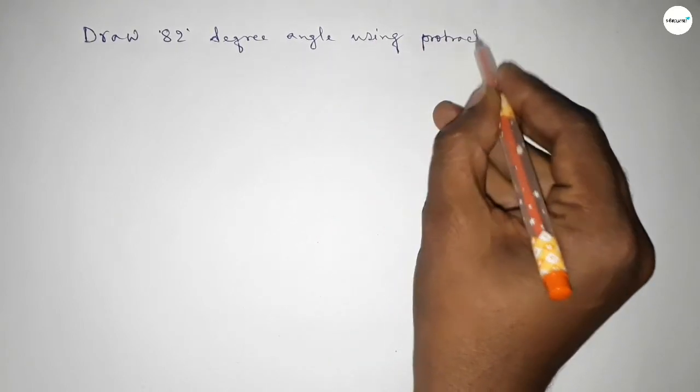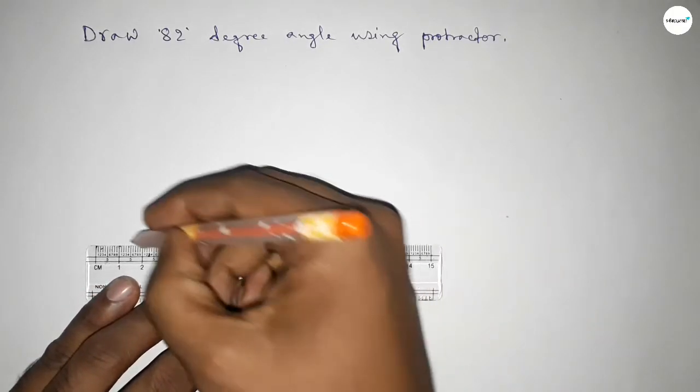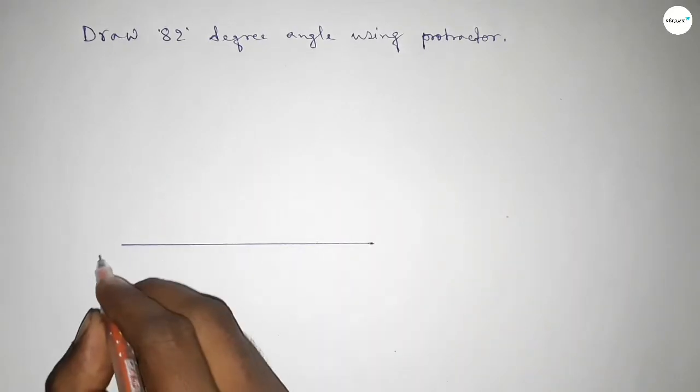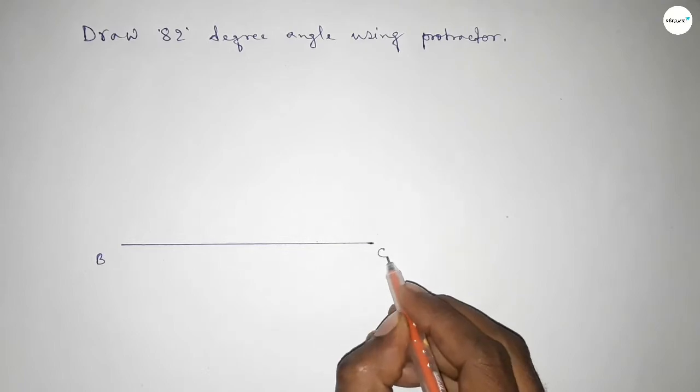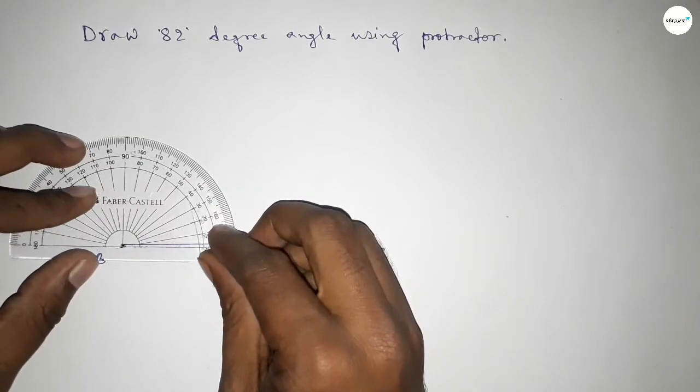So constructing an 82 degree angle, let's start the video. First of all, we have to draw here a straight line of any length, taking here point B and here point C. Now putting the protractor on point B perfectly.